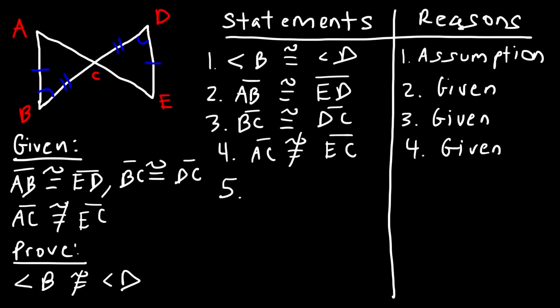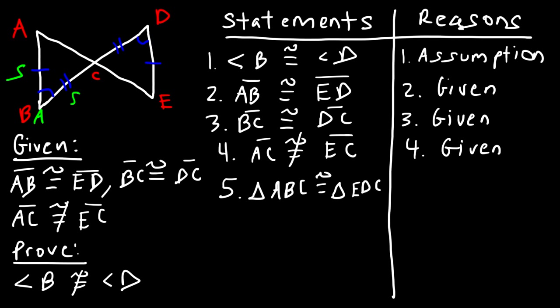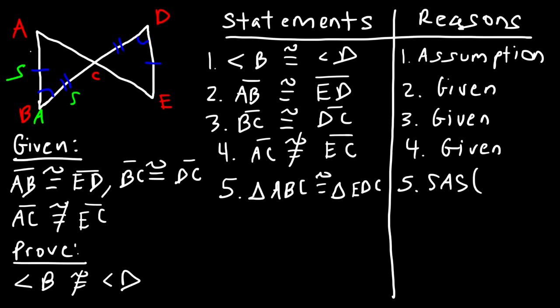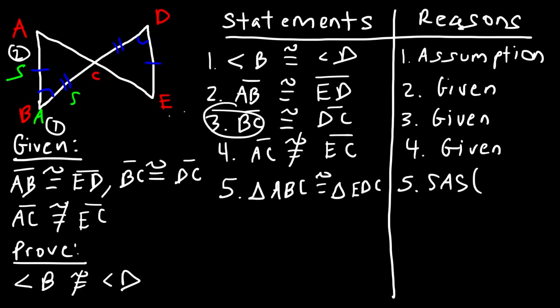For statement five, we can prove the two triangles are congruent using the Side-Angle-Side postulate. Triangle ABC is congruent to triangle EDC — A corresponds to E, D corresponds to B. This is based on the SAS postulate using statements two, one, and three: AB from statement two, angle B from statement one, and BC from statement three.